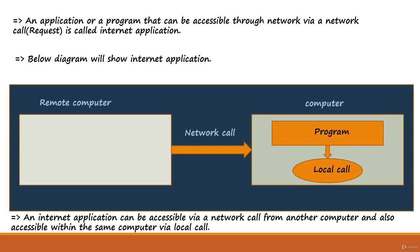The below diagram will show an internet application. We have a remote computer and a local computer. The local computer has a program running on it. I want to give a network call from the remote computer. If it is accessible from the remote computer, then it is called an internet application.